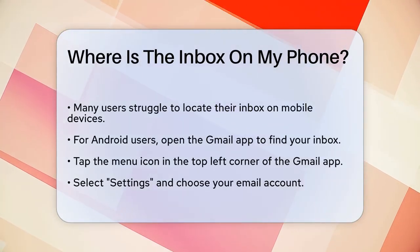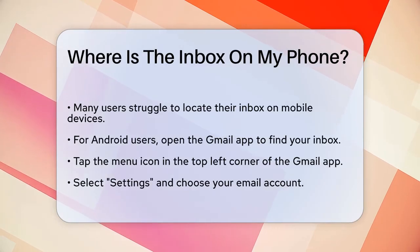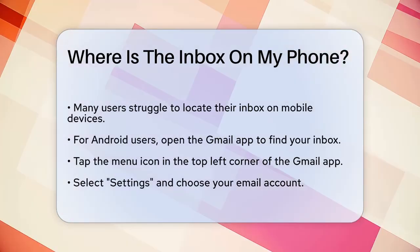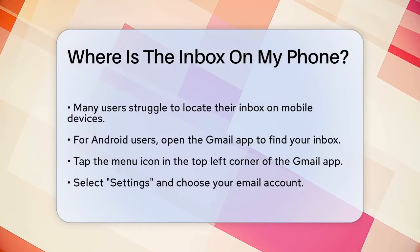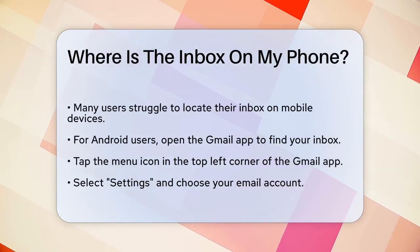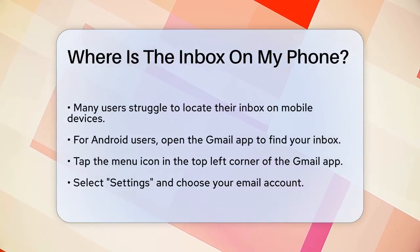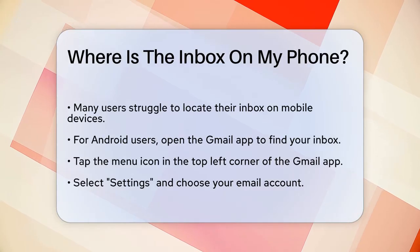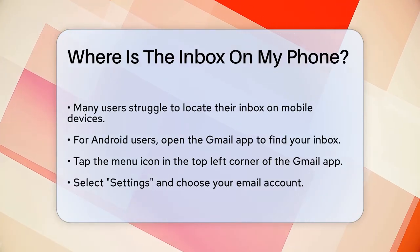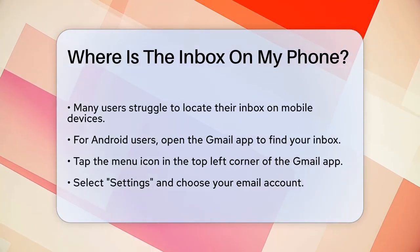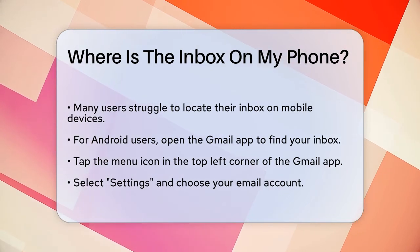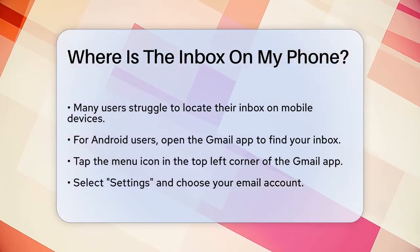First, let's start with Android users, particularly those using the Gmail app. To find your inbox, open the Gmail app on your Android phone or tablet. In the top left corner, you'll see a menu icon. Tap on it, and then select Settings. Here, choose your email account, and under the Inbox section, you can select your preferred inbox layout.